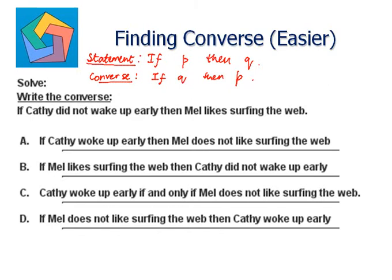So, here 'if Cathy did not wake up early' — this is my hypothesis. 'Then Mel likes surfing the web' — this is my conclusion. So they both get interchanged. I will get: if Mel likes surfing the web, then Cathy did not wake up early. Which is the answer in the B part.